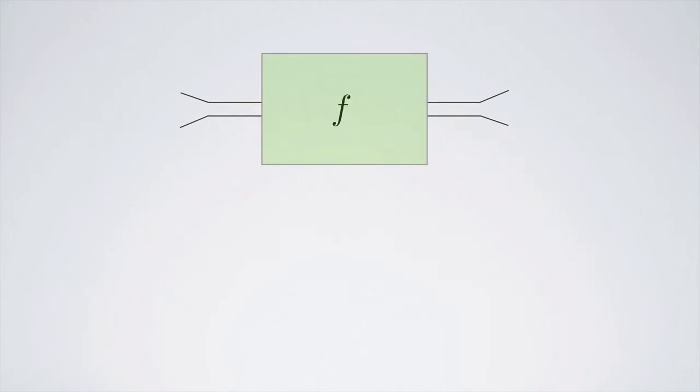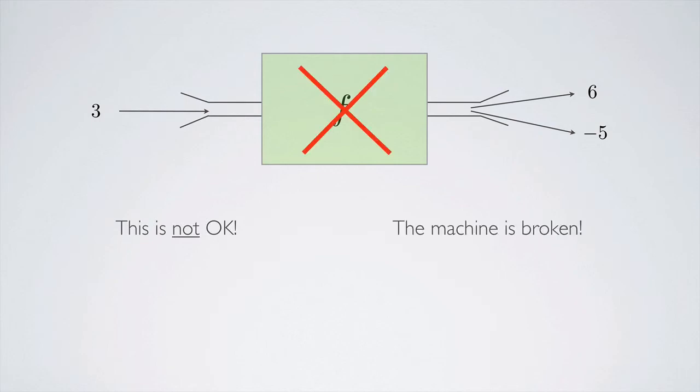Now, suppose we had a function where we put in 3 and we got out 6 and negative 5. Well, that's not okay. The machine must be broken because that's not a function machine. The exactly one part of the definition is important.